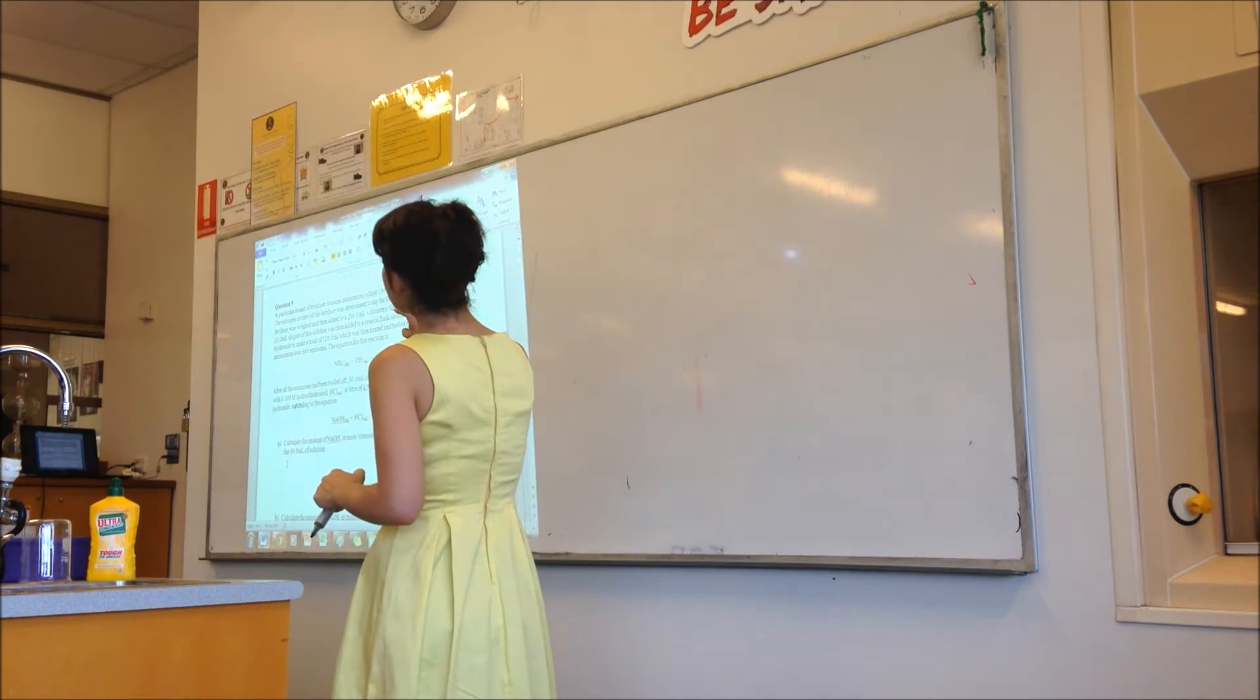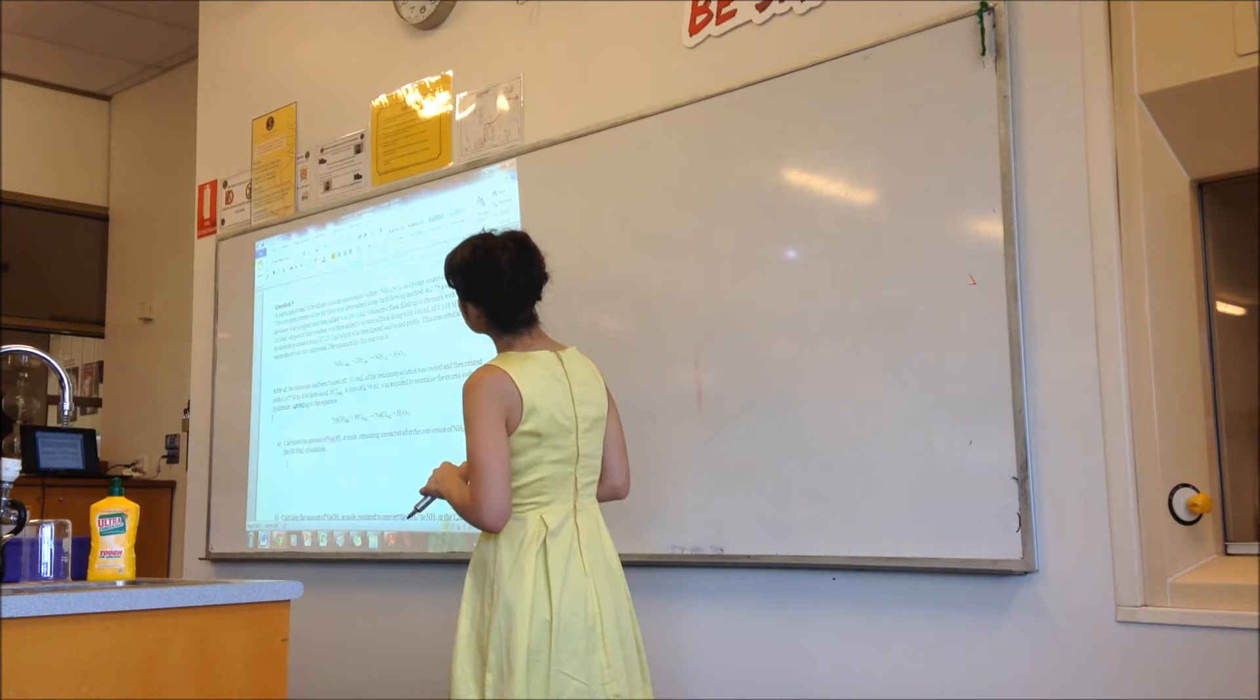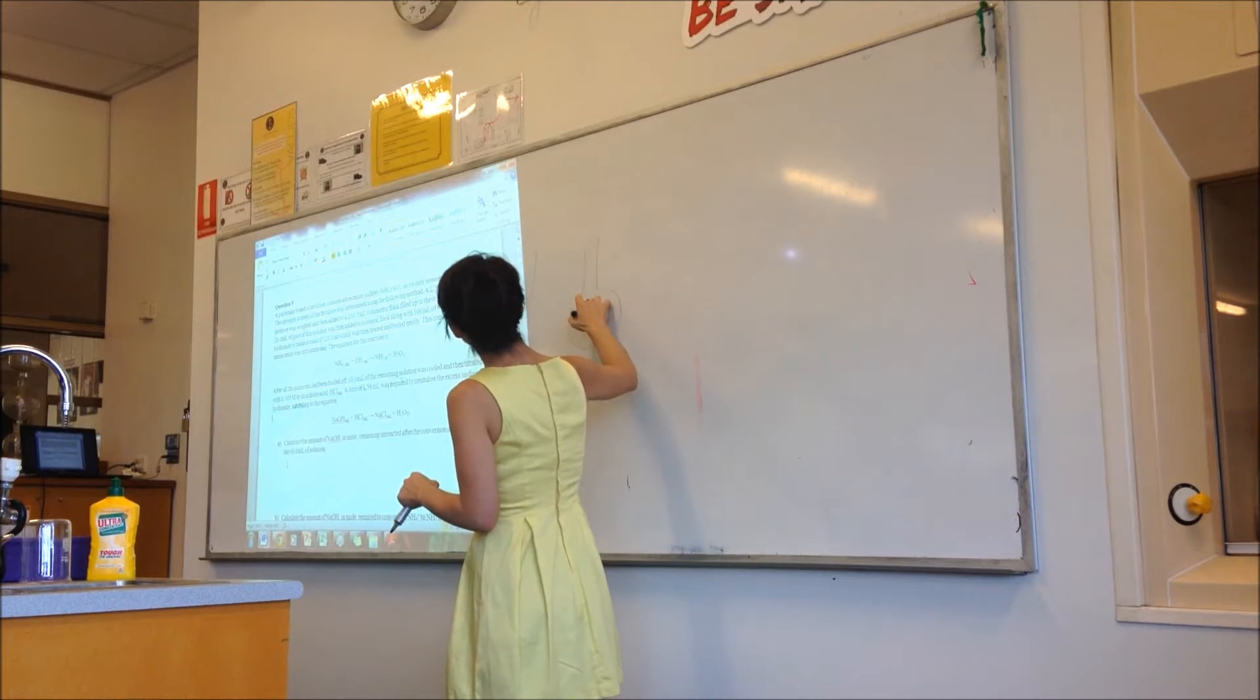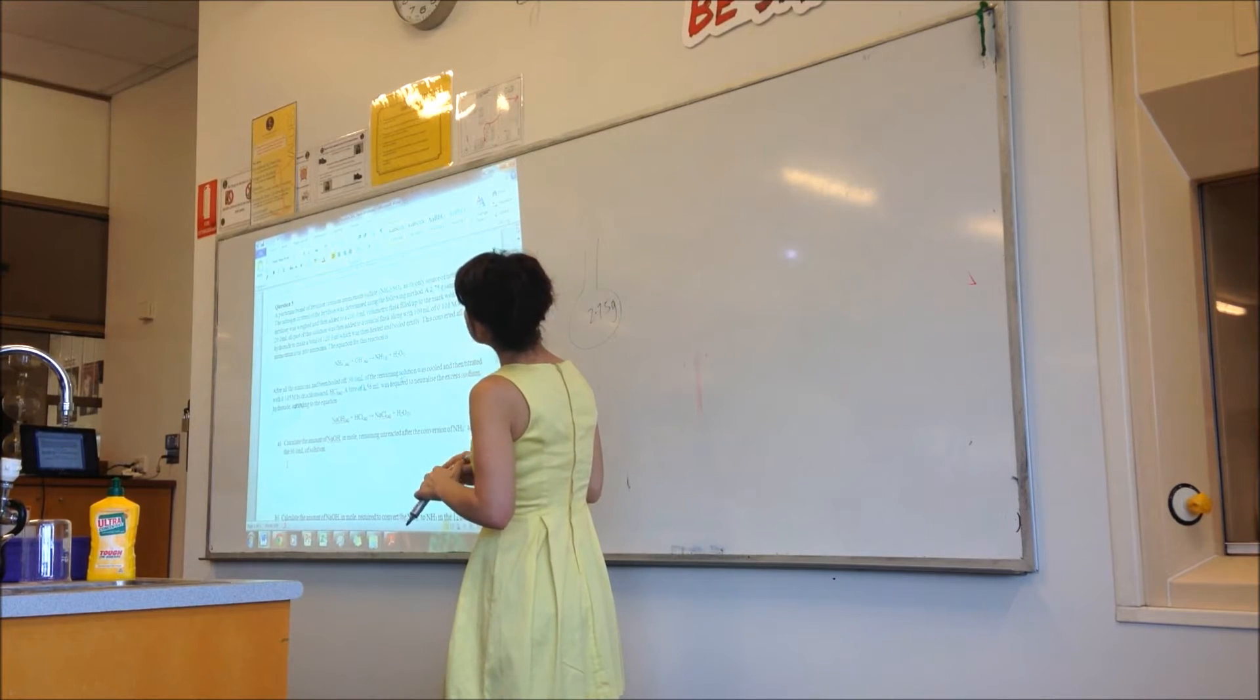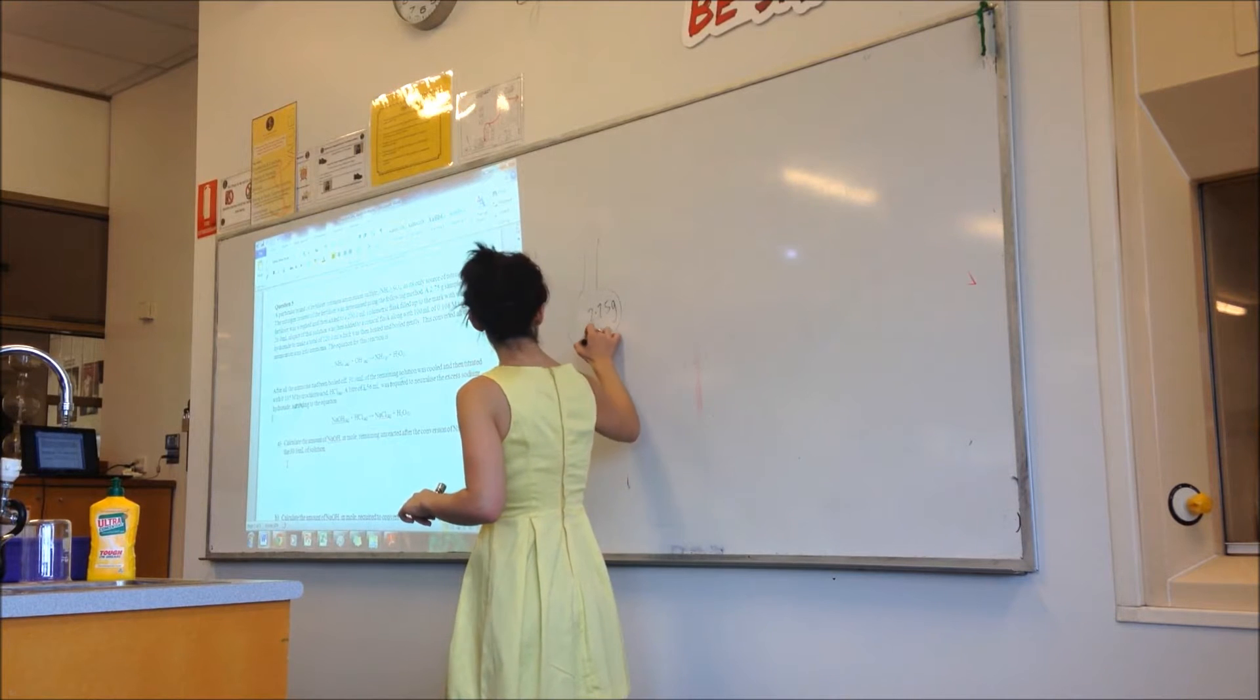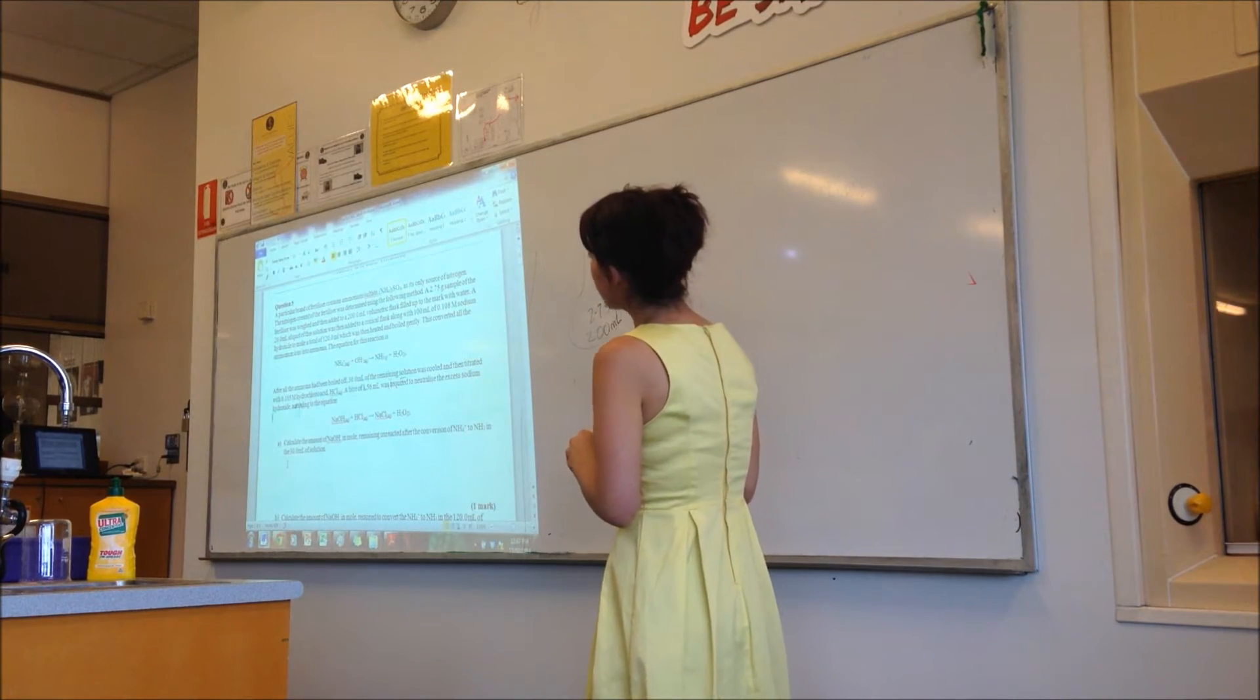Okay, a particular brand of fertilizer contains ammonium sulphate as its only source of nitrogen. The nitrogen content was determined using the following method. A 2.75 gram sample of the fertilizer was weighed and then added to a 200ml volumetric flask. It's filled up to the mark with water.